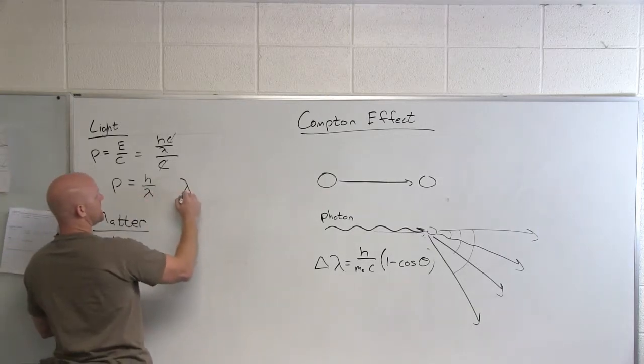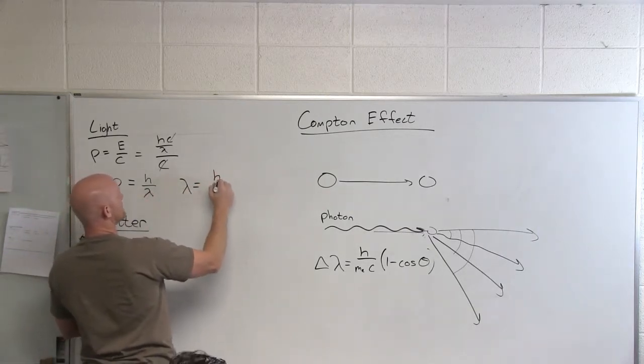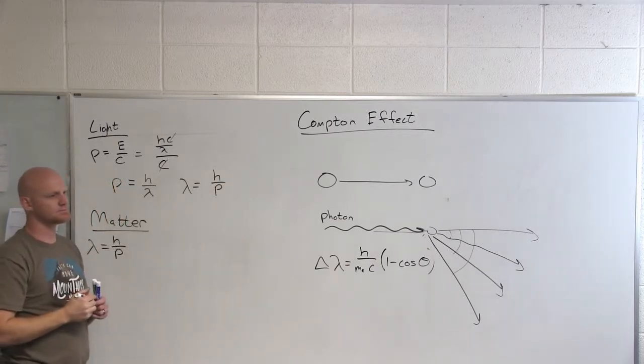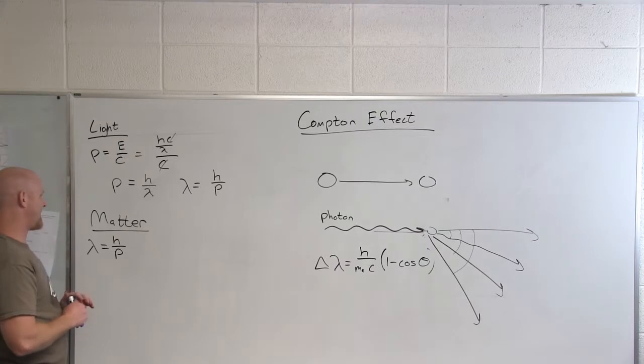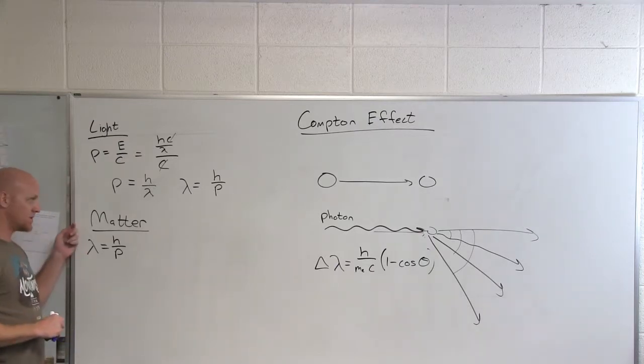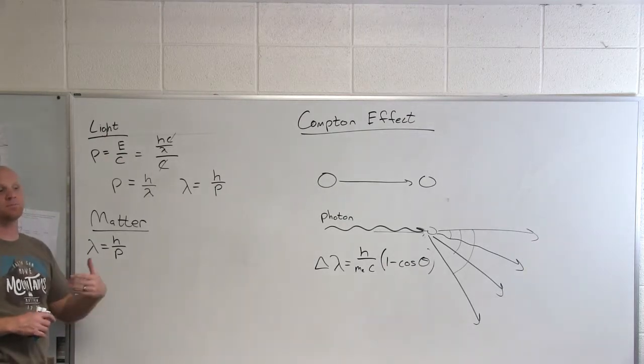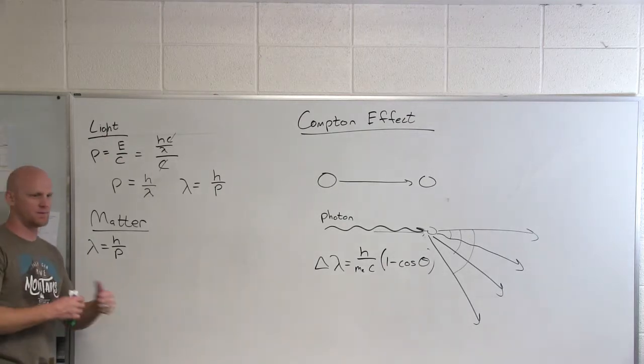If you rearrange that and solve for the wavelength of light, you could say that the wavelength equals h over the momentum of light. So if we look at matter on the other hand, people were getting a little crazy with the idea that light wasn't purely wave-like behavior, it also had particle-like behavior.